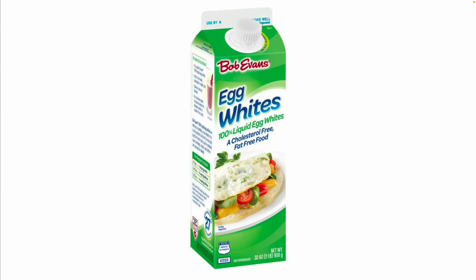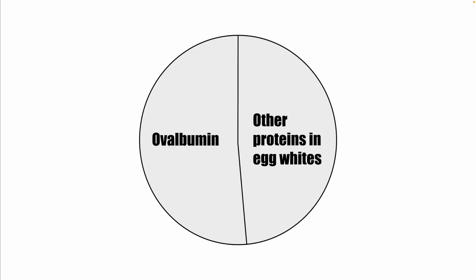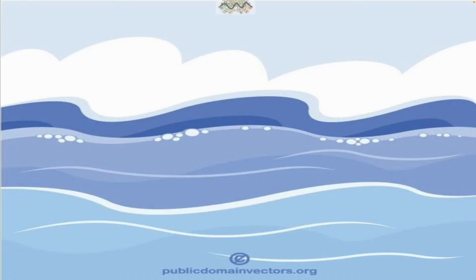The second protein is ovalbumin. You can find this protein in egg whites — it is the main protein found there, making up about 55% of the protein in egg whites. Ovalbumin is a monomeric phosphoglycine protein, a type of water-soluble protein, meaning it can be dissolved in water. Ovalbumin is made up of carbon, hydrogen, nitrogen, and oxygen. This is its chemical formula.